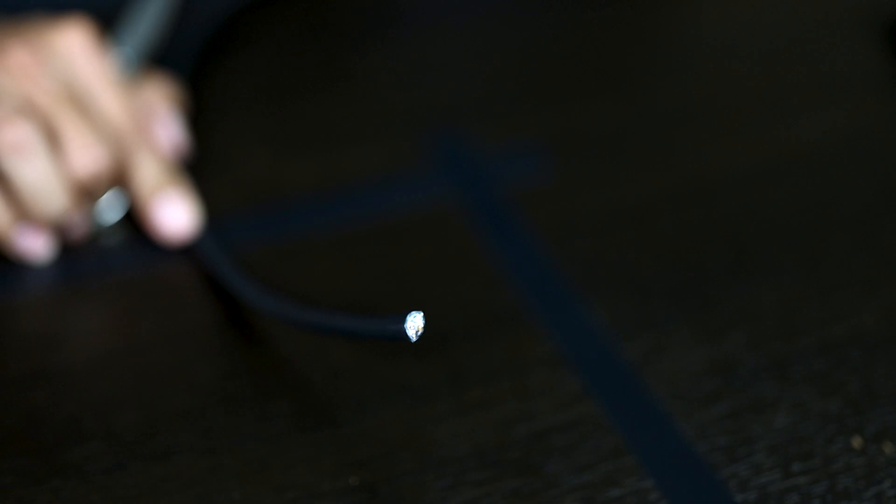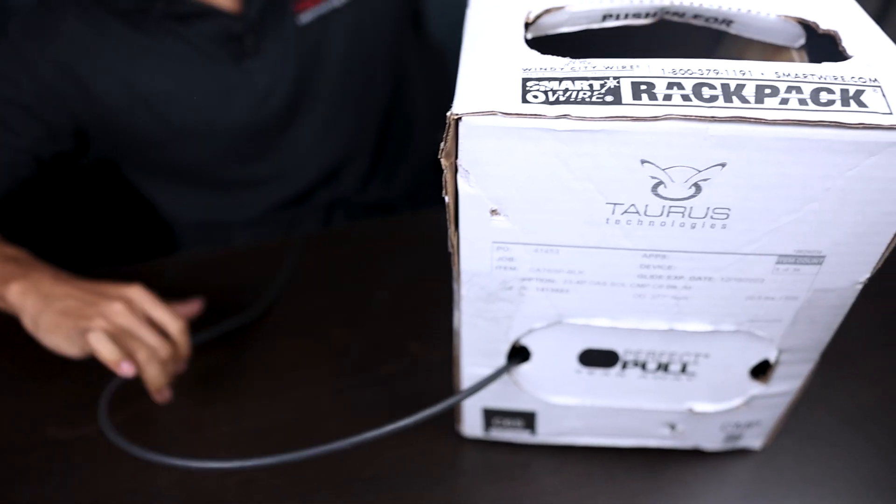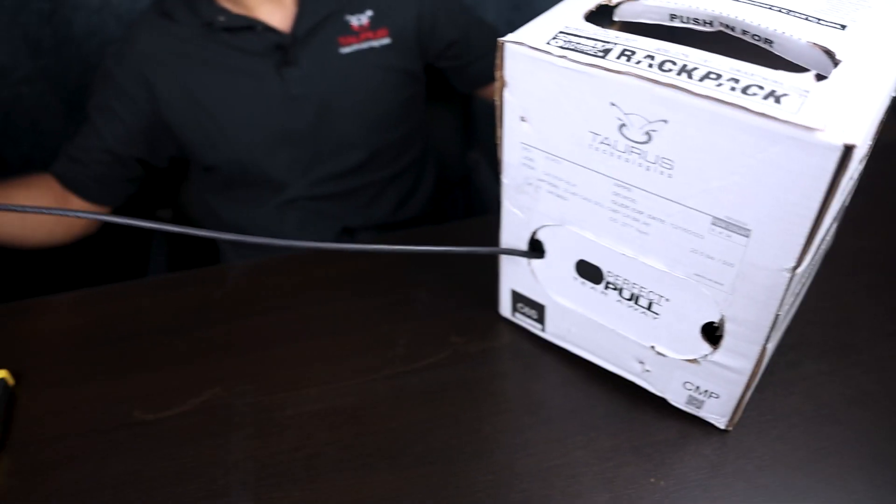Hi, my name is Gabe and I'm going to show you the easiest way to terminate a shielded Cat 6 cable. To get started, you're going to take your drum of cable and cut that to whatever length you need.